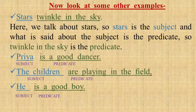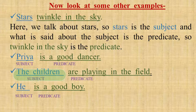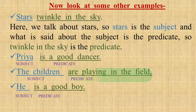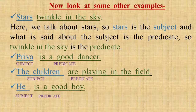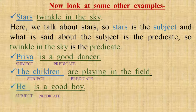The next sentence is 'The children are playing in the field.' Here, the subject is 'The children,' and 'are playing in the field' is the predicate. Now, the last sentence is 'He is a good boy.' We can ask the question, 'Who is a good boy?' The answer is 'He.' So, 'He' is the subject, and 'is a good boy' is the predicate.